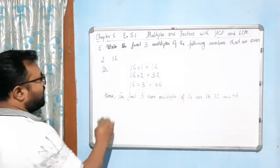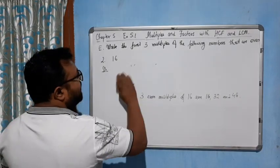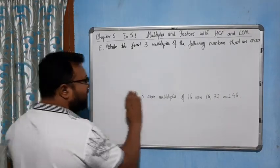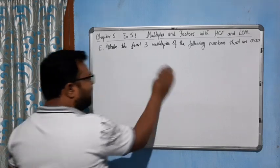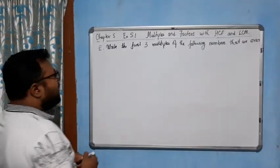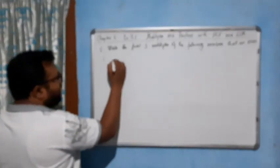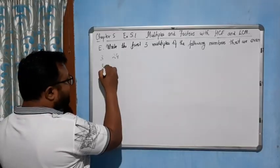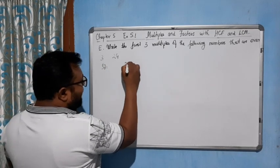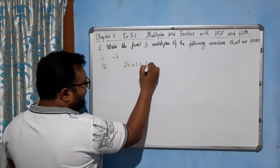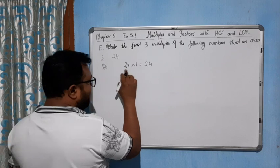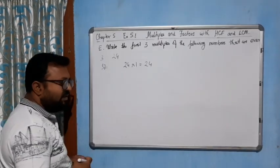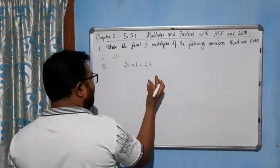Now come to the next question, it is 24. The third number is 24. 24 into 1 equals 24. See, it is an even number. So whenever you multiply an even number with any number, you will get an even result.